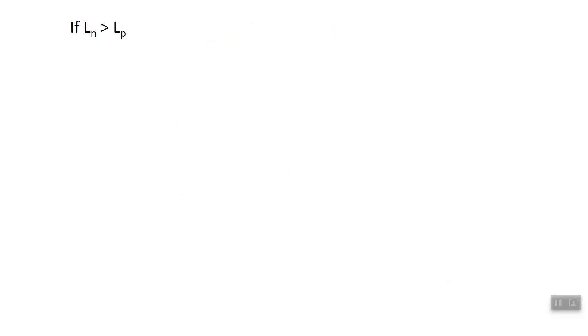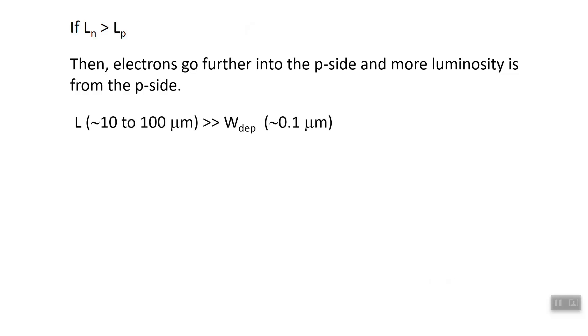Let's look at why that is. If the diffusion length of electrons in the material is larger than the diffusion length of holes in the material, and that's typically the case, electrons can go further. So electrons are going to diffuse farther into the p-side than holes will diffuse into the n-side. The electrons are much more likely to make it across the depletion region. The diffusion length is typically, especially for electrons, one to two orders of magnitude, sometimes three orders of magnitude larger than the depletion width.